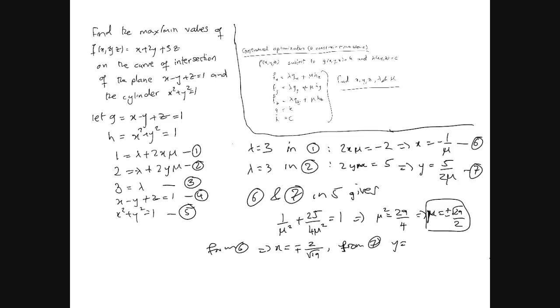Similarly, from equation 7, y is going to be equal to plus or minus, now this one I have to be careful here. When I put the root 29, it's going to be 5 over root 29. So that's x and y. Now that we have x and y, we can easily get z from equation 4.